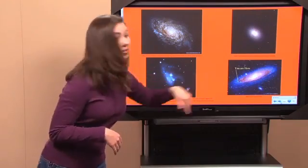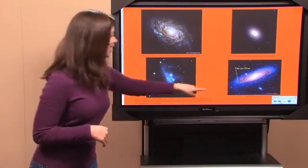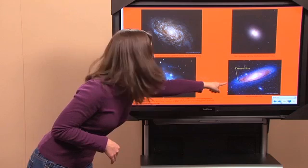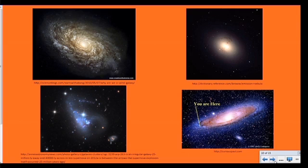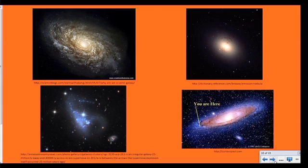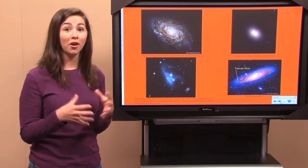But here's our galaxy, the Milky Way galaxy. And do you see that tiny, tiny little dot of light? Yeah, the really, really tiny one right there? That's us. That's our solar system. That's how small we are compared to our entire galaxy.